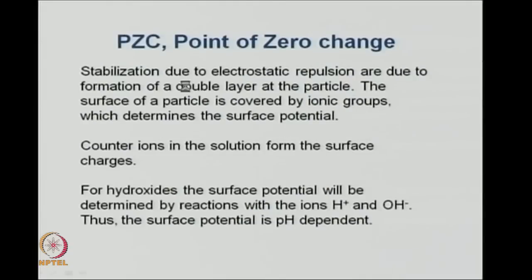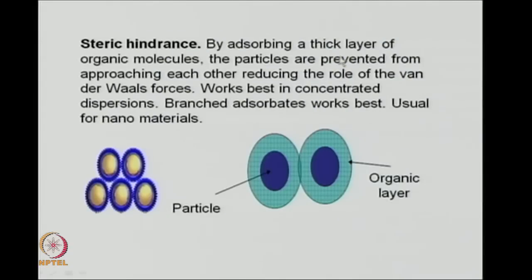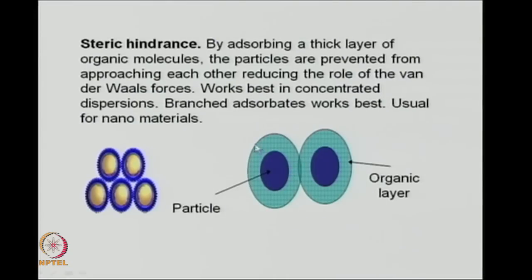One method to keep particles apart is using charge; the other is using steric hindrance. You can coat a particle with an organic layer, and that organic layer will prevent two particles from coming close. This works well in concentrated solutions or dispersions and is also used for synthesizing nanomaterials. If you have nanoparticles and want to keep them separate and not coalescing, you coat each nanoparticle with organic molecules or surfactant molecules. They form a shell-like structure and keep the two particles apart — sterically keeping them separated.